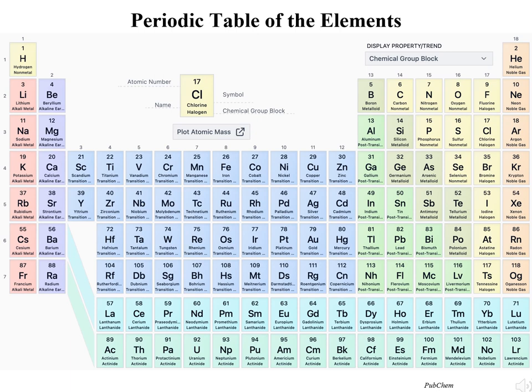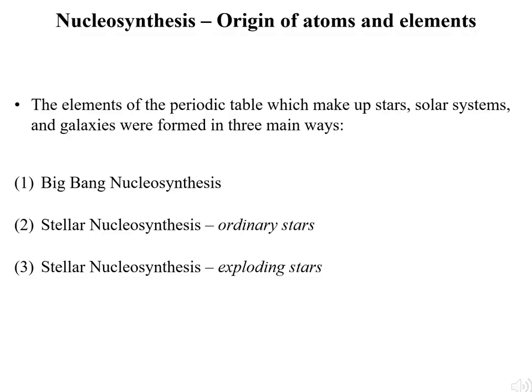According to their chemical properties, nucleosynthesis is the name that scientists give to the processes which form the elements. We are going to look at three different ways that processes in our universe form the naturally occurring elements found on the periodic table.